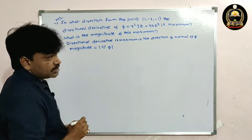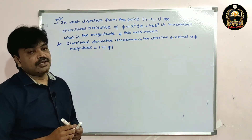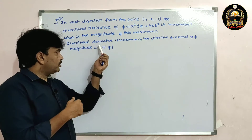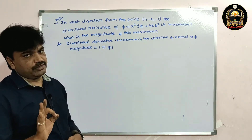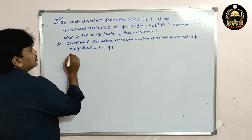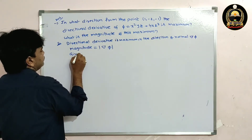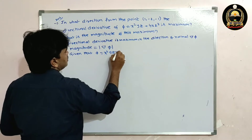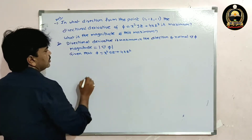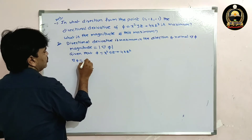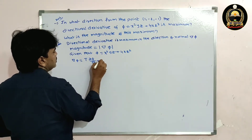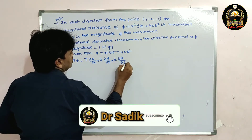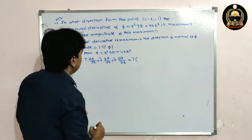It is enough to find del φ at the point and then find modulus of del φ. Given that φ = x²yz + 4xz², simply find del φ. Del φ equals i-bar (∂φ/∂x) plus j-bar (∂φ/∂y) plus k-bar (∂φ/∂z).